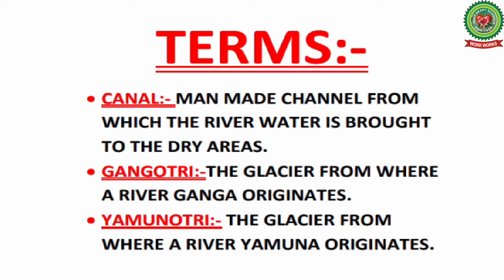Today we will do the Sutlej basin and the Ganga basin. Here are the key terms related to today's topic. Our first term is canal, which means a man-made channel from which river water is brought to dry areas. Second, Gangotri — the glacier from where river Ganga originates. Third, Yamunotri — the glacier from where river Yamuna originates.